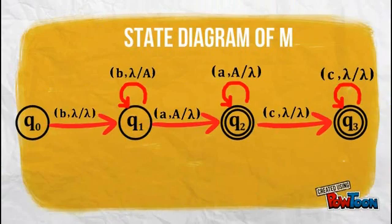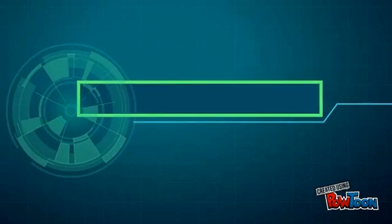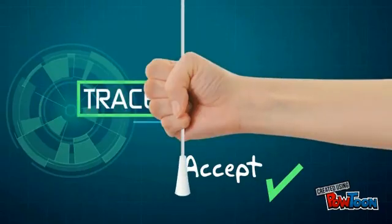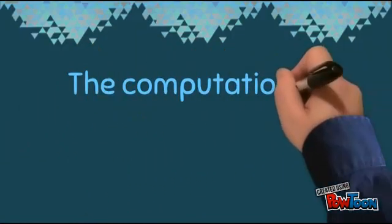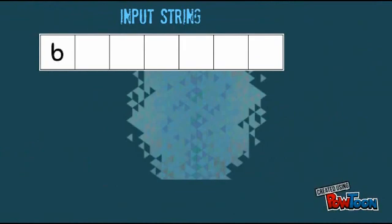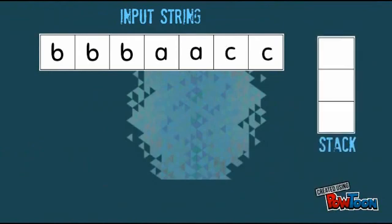This is the state diagram of M. Trace the string. Input string: B, B, B, A, A, C, C — stack.